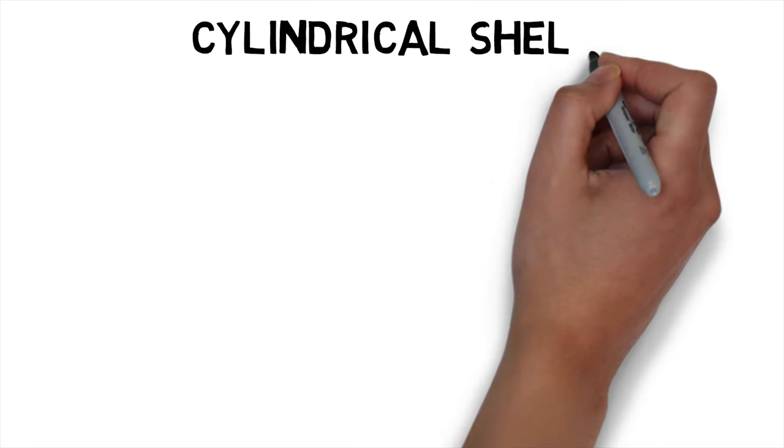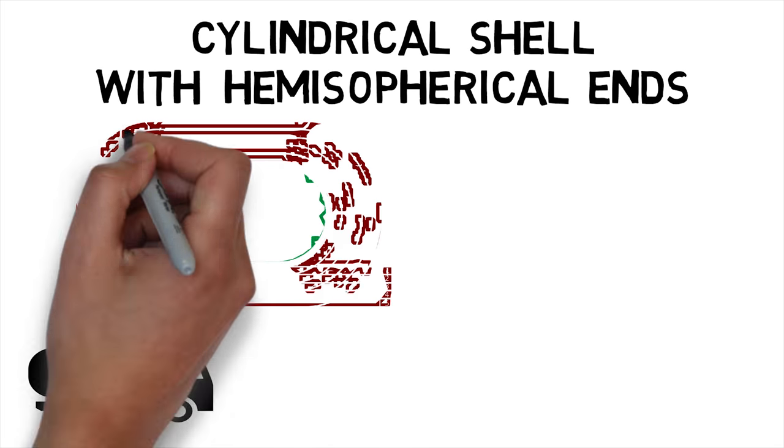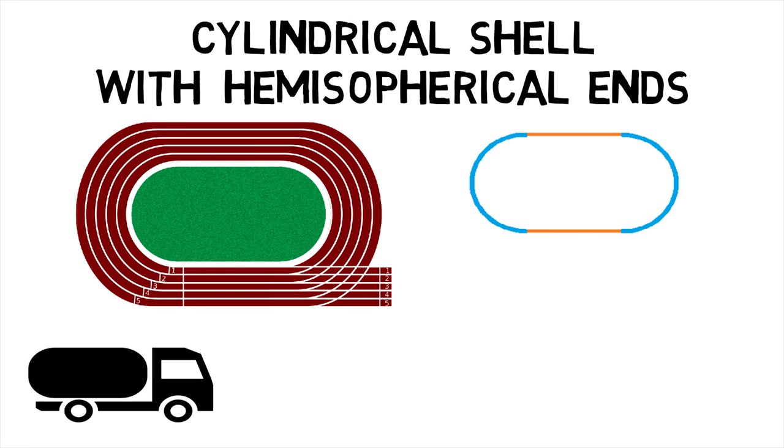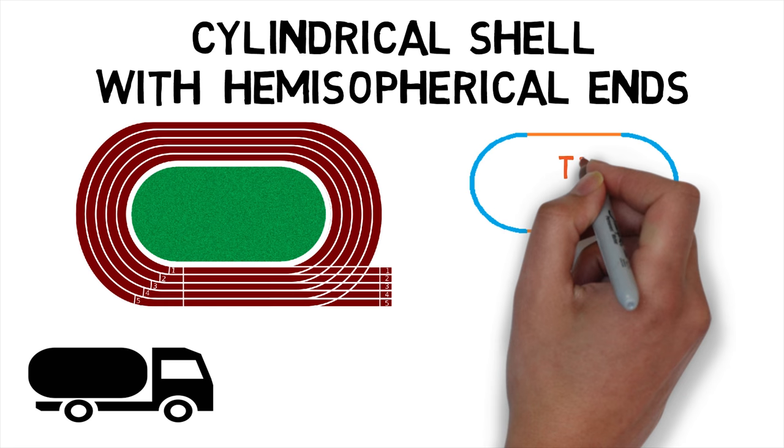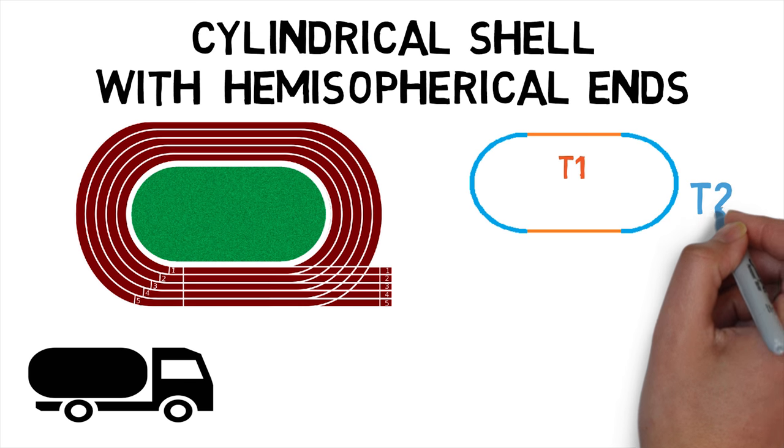A cylindrical shell with hemispherical end shaped containers are used to transport oil among other major applications. Consider a cylindrical shell with hemispherical ends having thickness T1 and T2 of the cylindrical and hemispherical walls respectively.